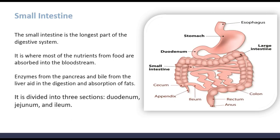The small intestine is the longest part of the digestive system, and it is where most of the nutrients from the food are absorbed into the bloodstream. Enzymes from the pancreas and bile from the liver aid in the digestion and absorption of fats. It is divided into three parts: duodenum, jejunum, and ileum.